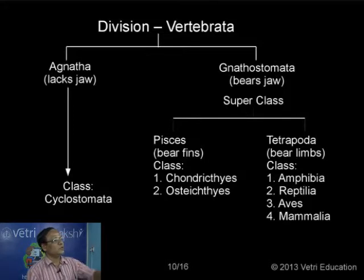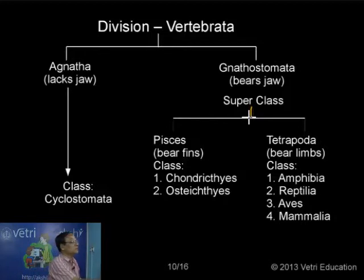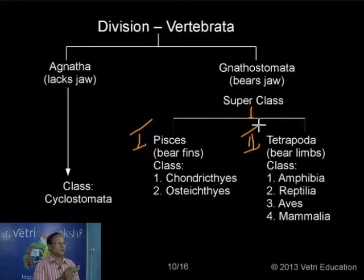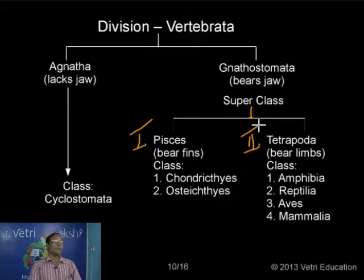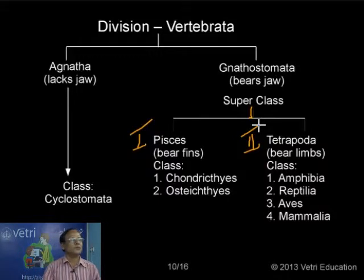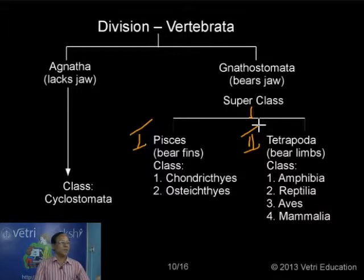Animals with jaws, Gnathostomata, are divided into two superclasses. Superclass one is Pisces - the fishes with fins. Superclass two is Tetrapoda - animals with four limbs, two forelimbs and two hindlimbs. The fishes include both cartilaginous fishes and osteichthyes. In the case of Tetrapoda, we have class Amphibia, Reptilia, Aves which include birds, and also Mammalia including human beings.